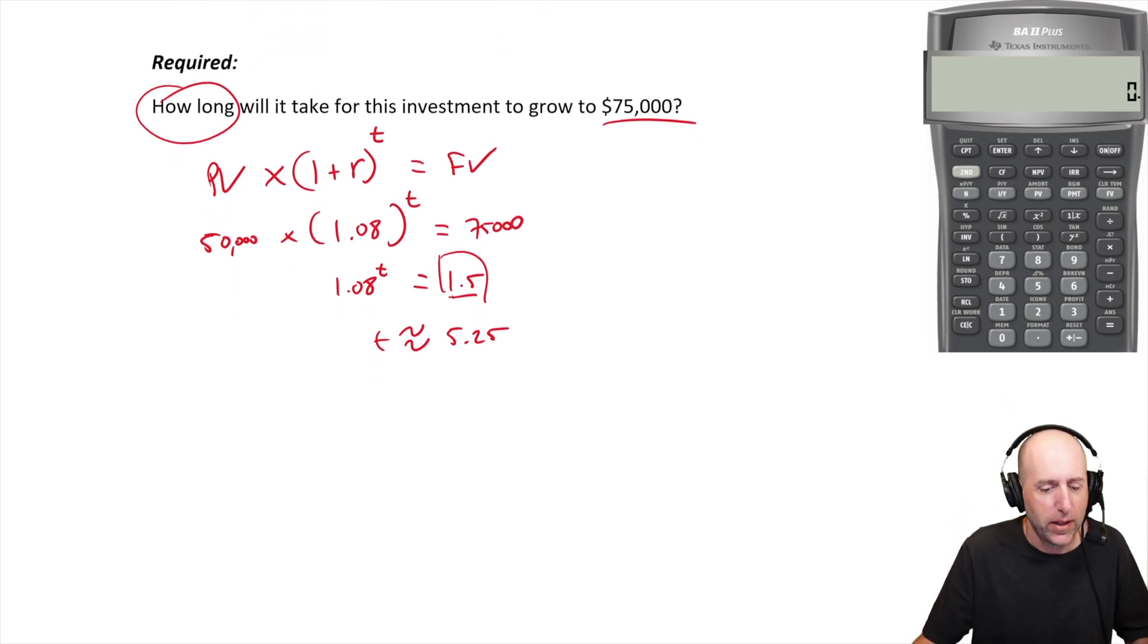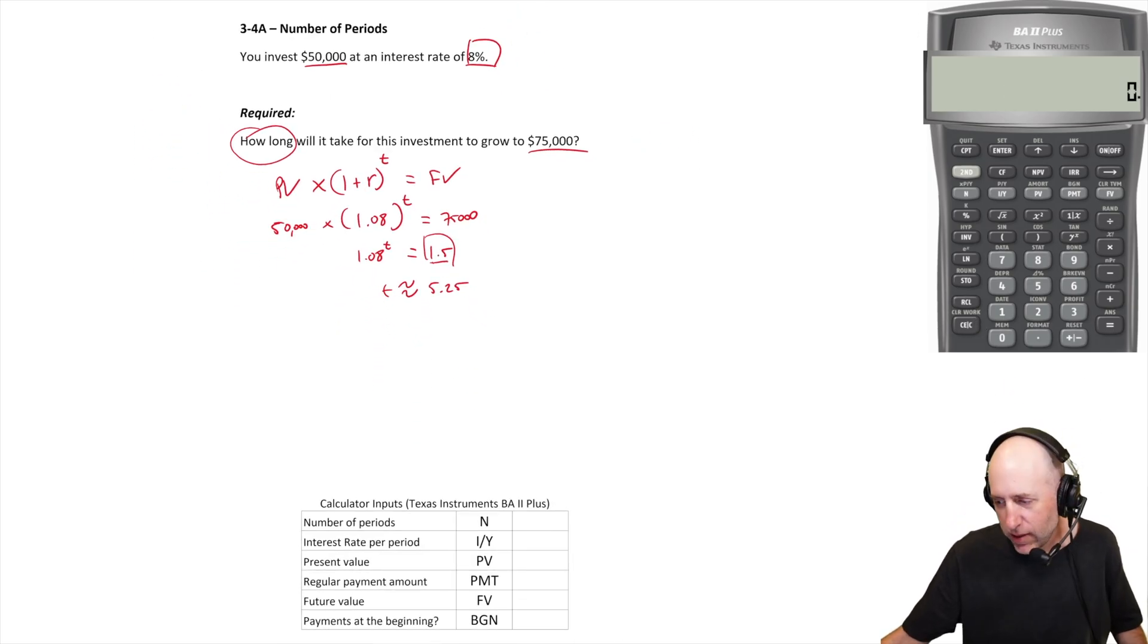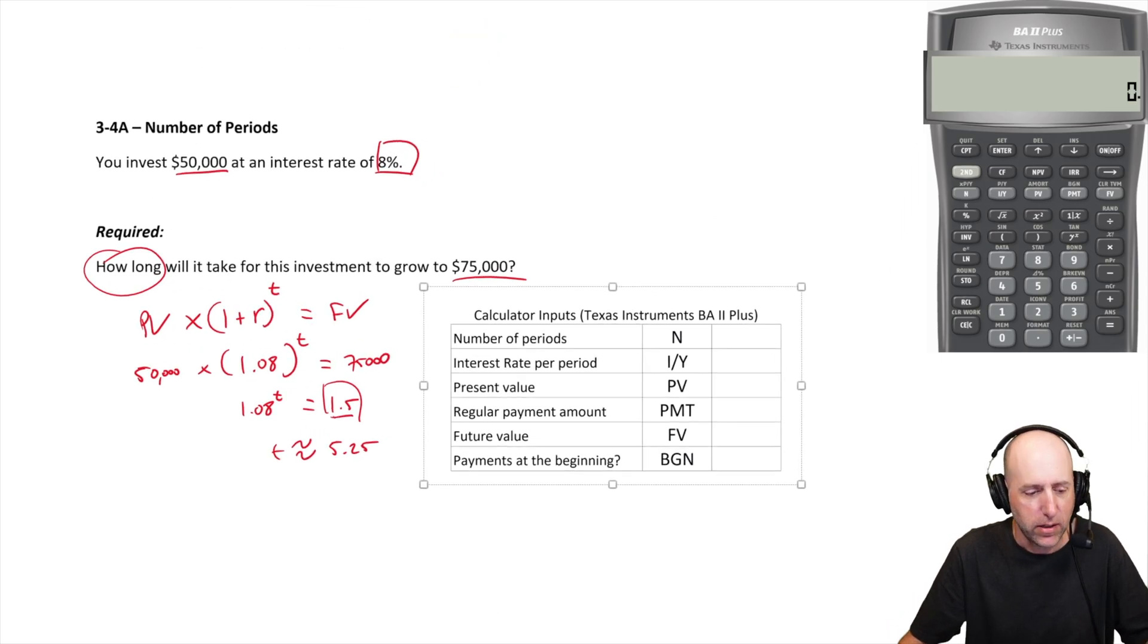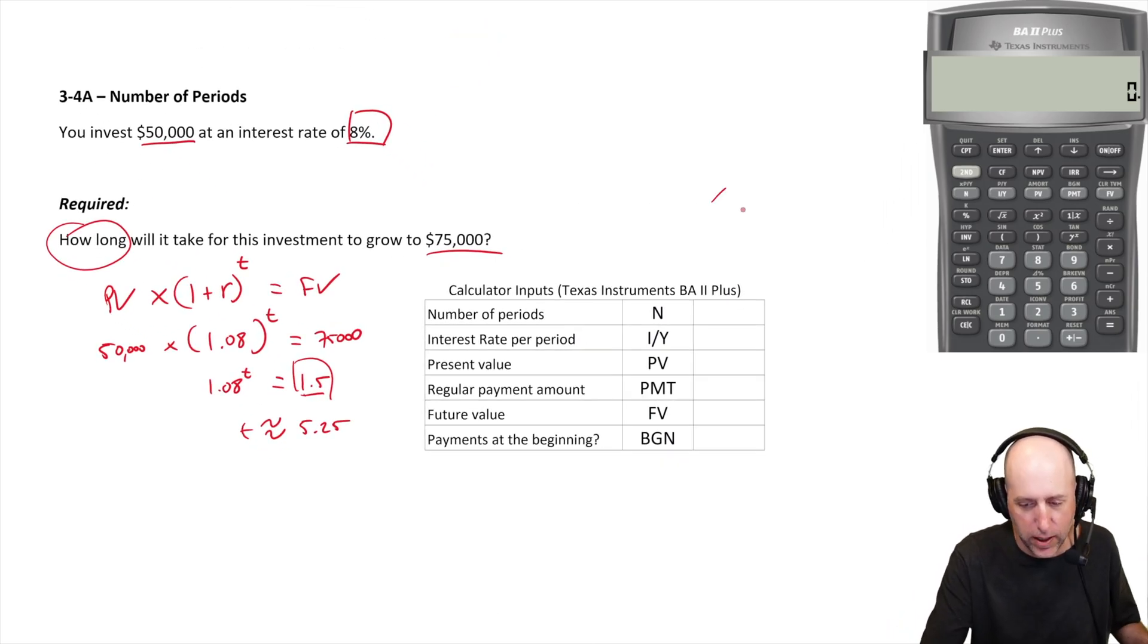Let's solve in our financial calculator. Let me pull up my little table here and we'll fill in the information that we've got. The number of periods is the thing that we're solving for. Our IY is 8%, our PV value today $50,000 - we're going to invest today.